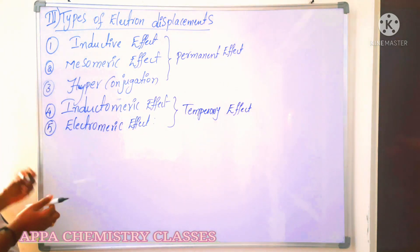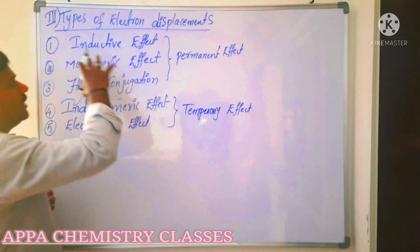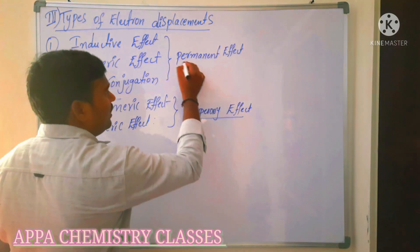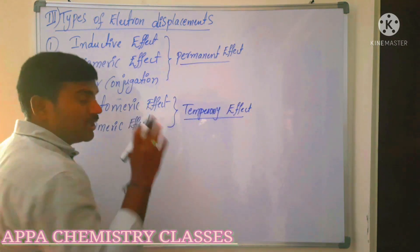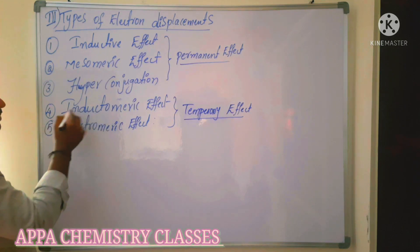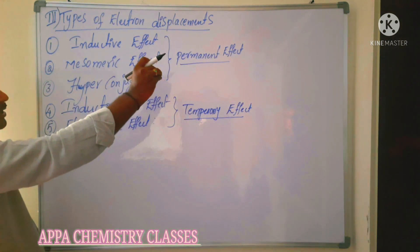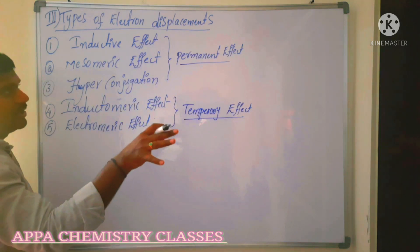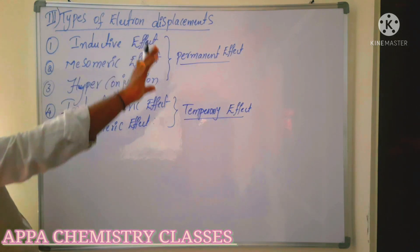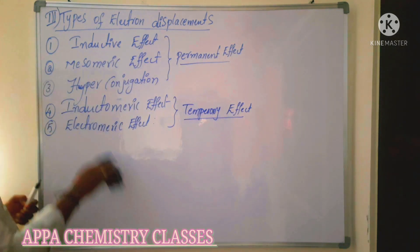The inductive effect, mesomeric effect, and hyperconjugation are permanent effects — electron displacement takes place even in the absence of an attacking reagent. Whereas the inductomeric effect and electromeric effect are temporary effects — electronic displacement occurs only in the presence of a suitable attacking reagent.